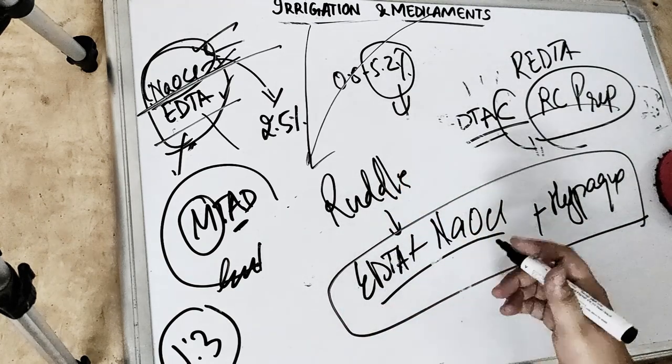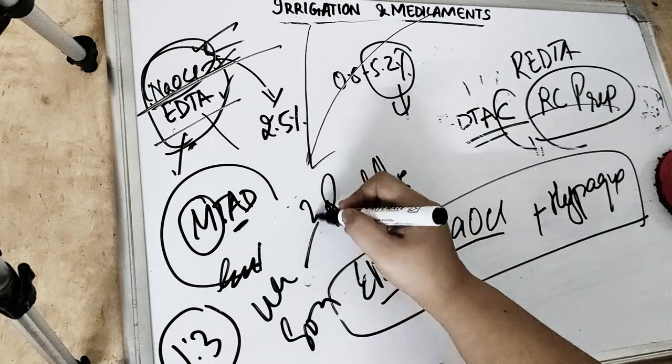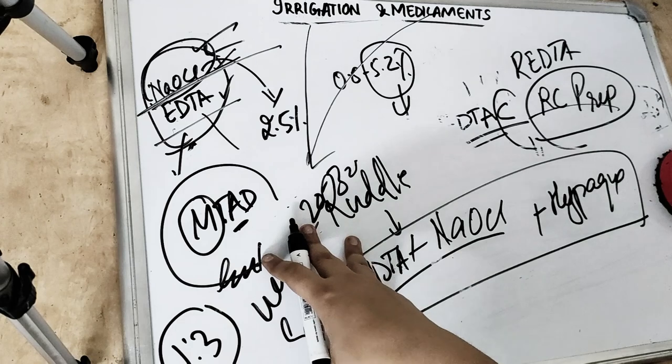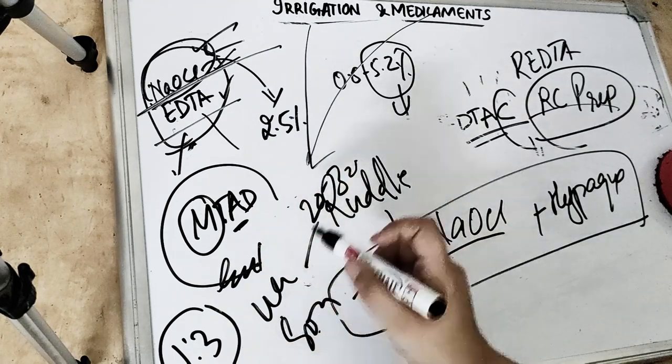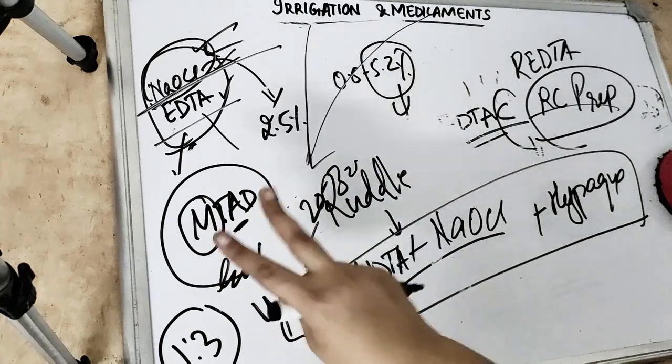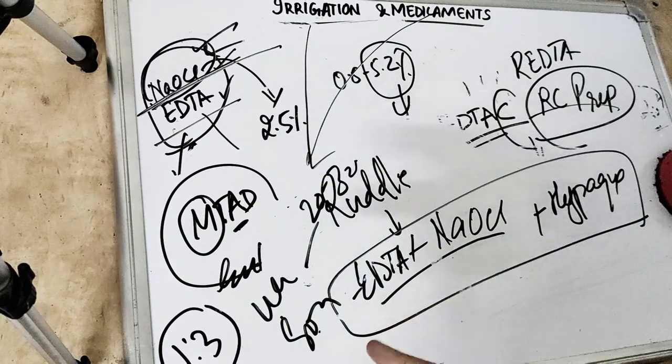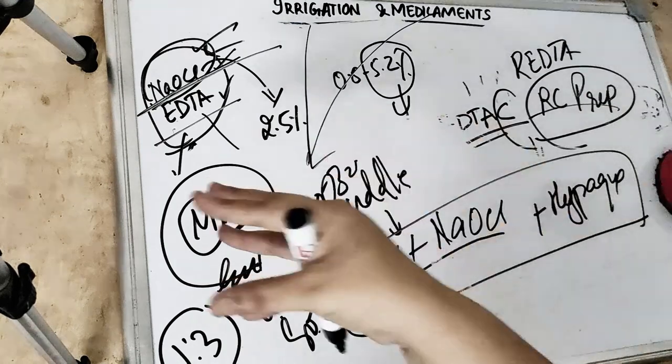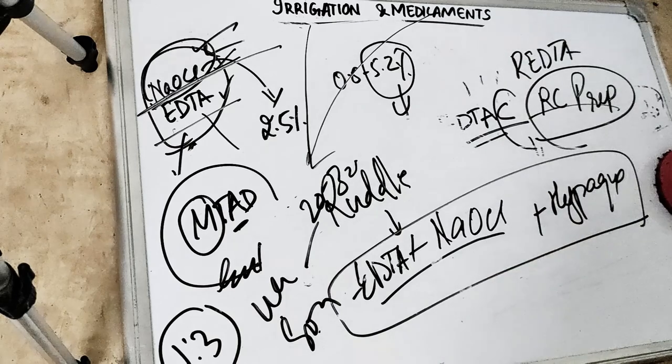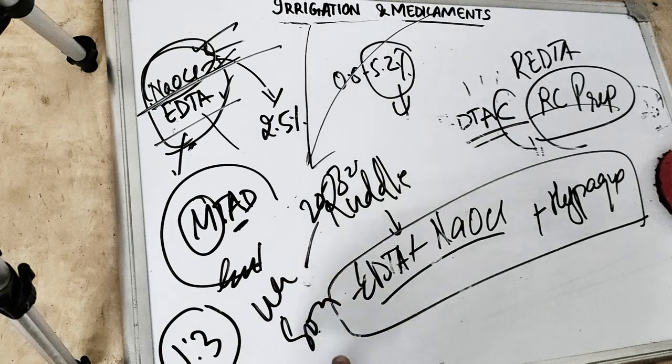Also we have endosonic instruments. We have ultrasonic and sonic instruments. Ultrasonic works at frequency of 20 to 30 kilohertz. Sonic is 1 to 6 hertz. The principle of endosonic instrument as irrigant is that it serves two purposes. One is implosion or cavitation, doing vibration movement. Second is acoustic streaming, a jet which is coming and creating bubble-like effects, effervescence effect. This is how it does the cleaning. Endosonic instruments given by Martin and Cunningham.